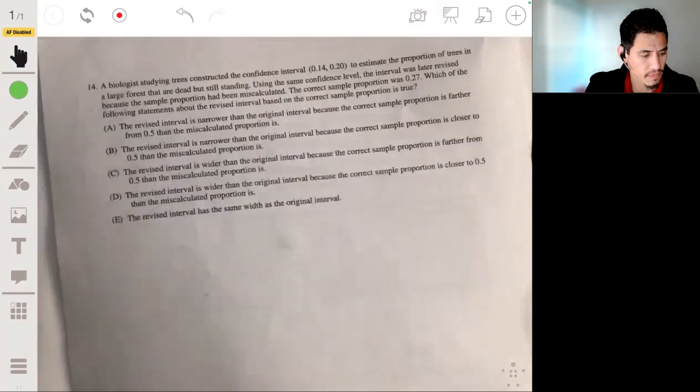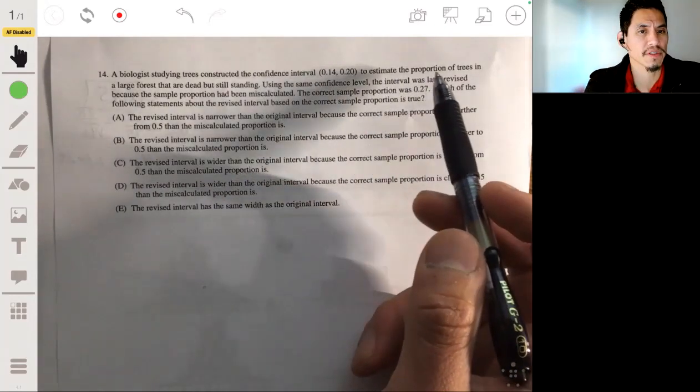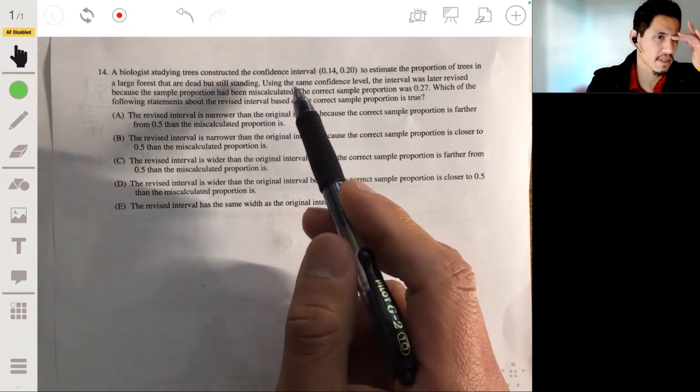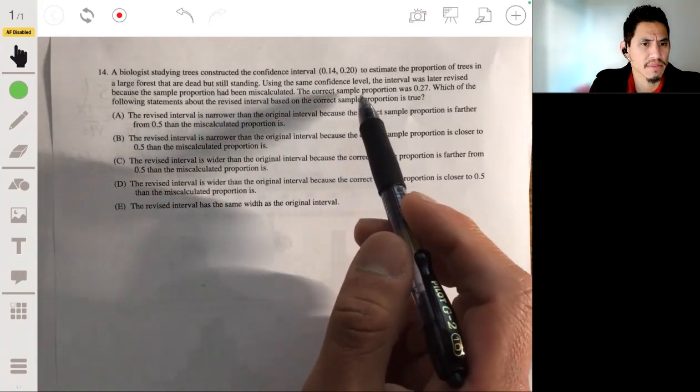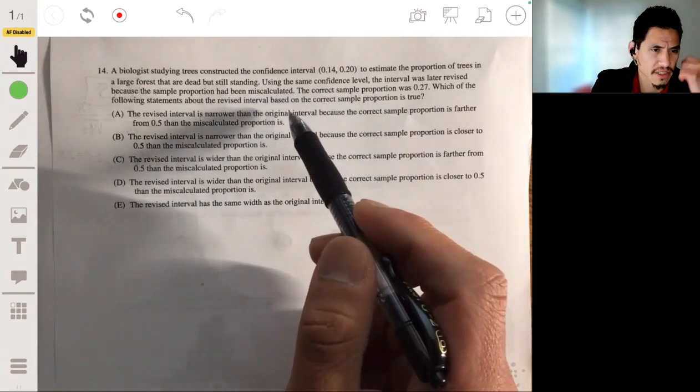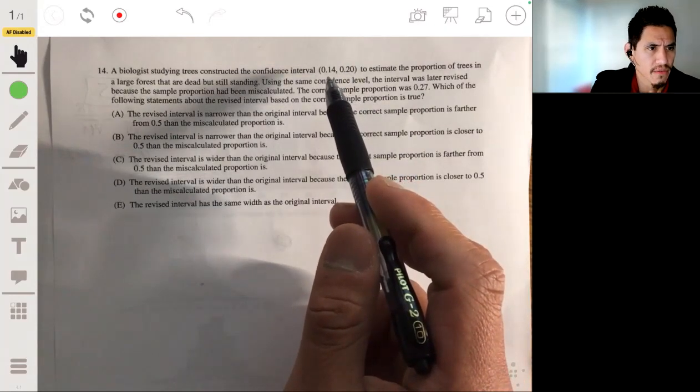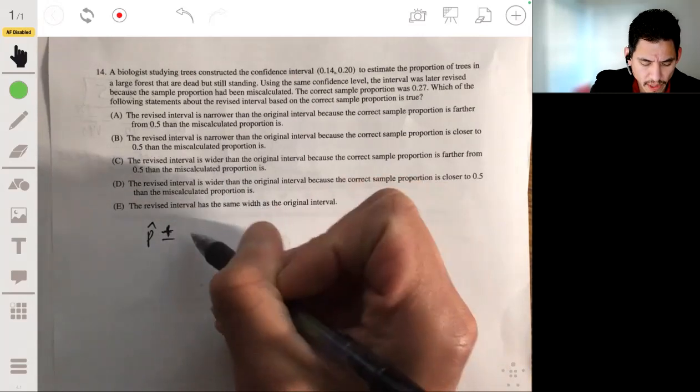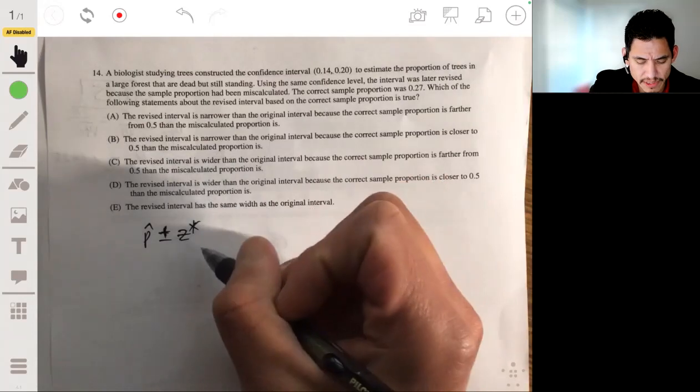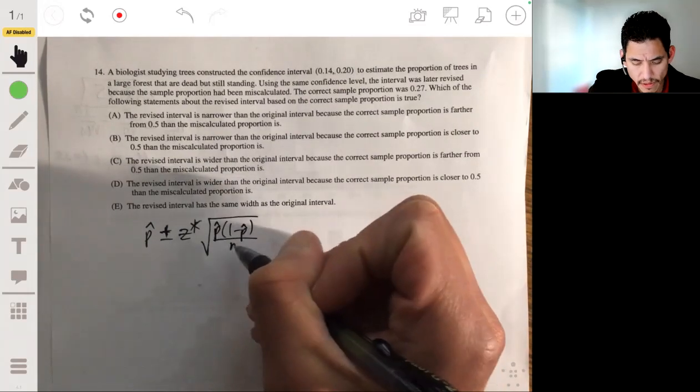Alright, number 14. A biologist studying trees constructed the confidence interval 0.14 to 0.22 to estimate the proportion of trees in a large forest that are dead, but still standing. Using the same confidence level, the interval was later revised because the sample proportion had been miscalculated. The correct sample proportion was 0.27. Which of the following statements about the revised interval based on the correct sample portion is true? Okay. So let's recall the form of a confidence interval. We have our point estimate P hat plus or minus our critical value. In this case it'd be Z star times the standard deviation of the statistic, which will be P hat times one minus P hat over N, all square rooted.